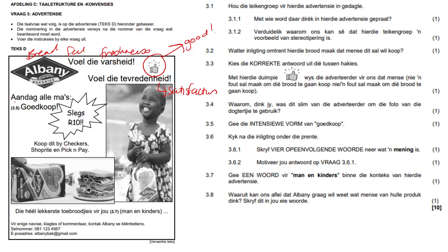Then we have aandag — attention — all mothers. Then we have goedkoop — very cheap, exclamation mark. Slags tien rand — only 10 rands — and that's in a star to capture your attention. Then we have a little girl here who's smiling while holding the bread, indicating that she's quite happy. She's content, and it plays at the heartstrings of mothers, because it's a little girl smiling with the bread.